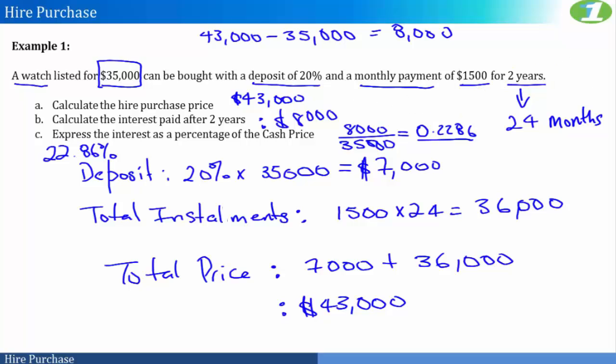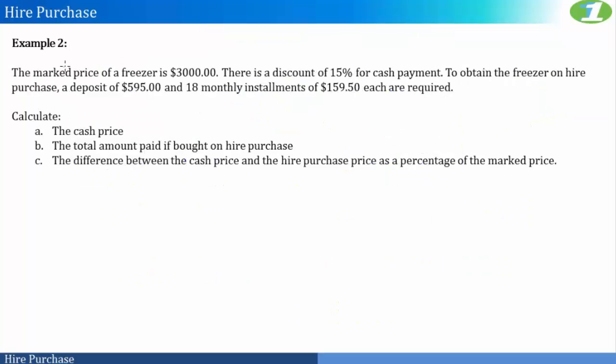Now let us look at another example. So here we see that the marked price of a freezer is $3,000. And there's a discount of 15% for cash payment. So if I were to pay for this freezer upfront, then I would have received a discount of 15% of the listed price. And to obtain the freezer on hire purchase, a deposit of $595 is required and 18 monthly installments of $159.50.